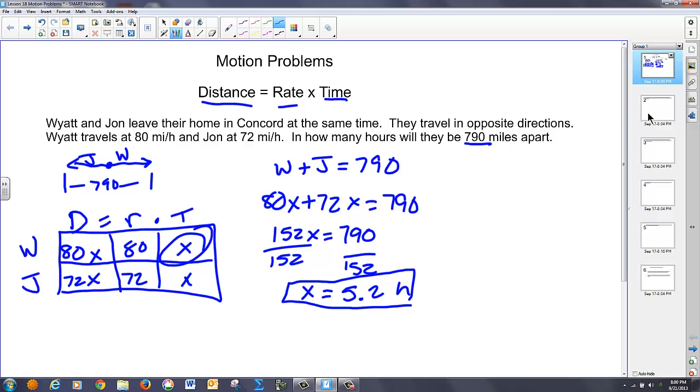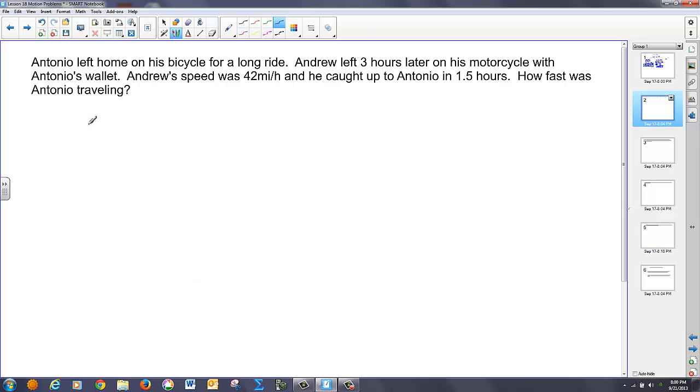So now we can move on. So here's another situation where Antonio leaves home. After three hours, Andrew takes off and realizes that Antonio left his wallet behind. Andrew's speed at 42 miles an hour, and he caught up to Antonio in an hour and a half. And how fast is Antonio traveling? So we've got Antonio going along this way. We've got Andrew going this way as well. And we want to know when they catch each other.